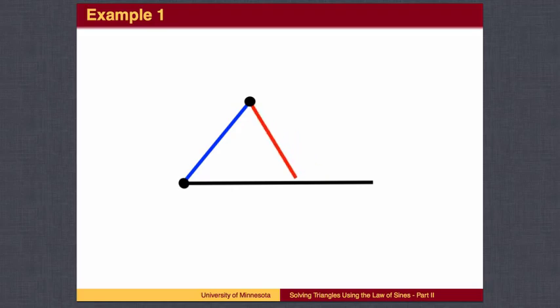We will swing the red side back and forth until it touches the black side. This will determine the two angles involving the red side and the necessary length of the black side.